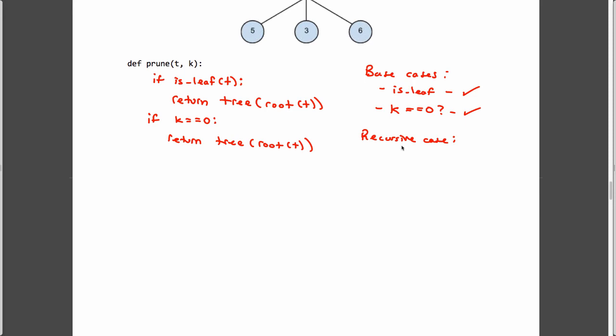if I'm returning a new tree, I need to keep track of two things. What's my entry, and what are my branches? Right? And then I need to return a new tree that has entry and branches. So, let's do that. Well, my entry here is equal to root t, right? So, I want to keep the same root if it's at the right depth, which it must be, right, because it's not k equal to 0. And my branches,